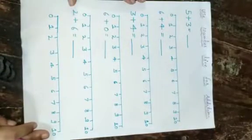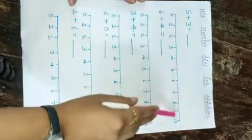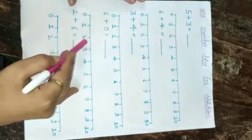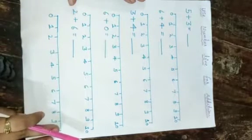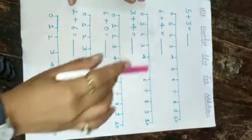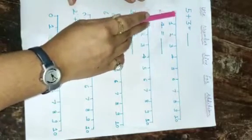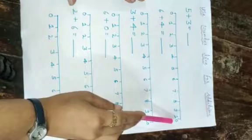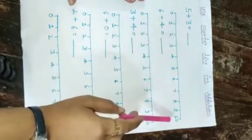Hello kids, today we will see addition on number line in notebook. First of all, children, you draw a straight line — at least five straight lines like this in your notebook with the help of your parents. And after drawing these lines, you will write numbers 0 to 10 on these number lines from left to right like this, children.